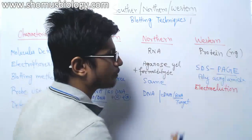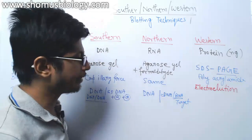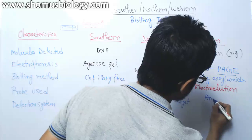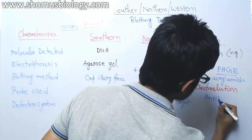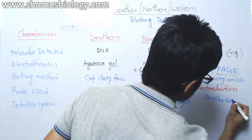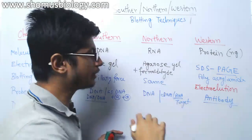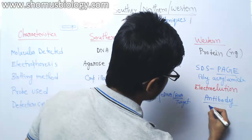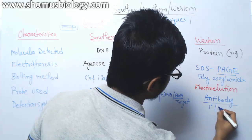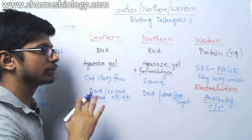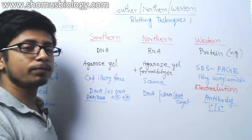In case of western blotting, it is completely different — we use antibodies as a probe, and actually two different antibodies: a primary antibody and a secondary antibody in the whole probing process.